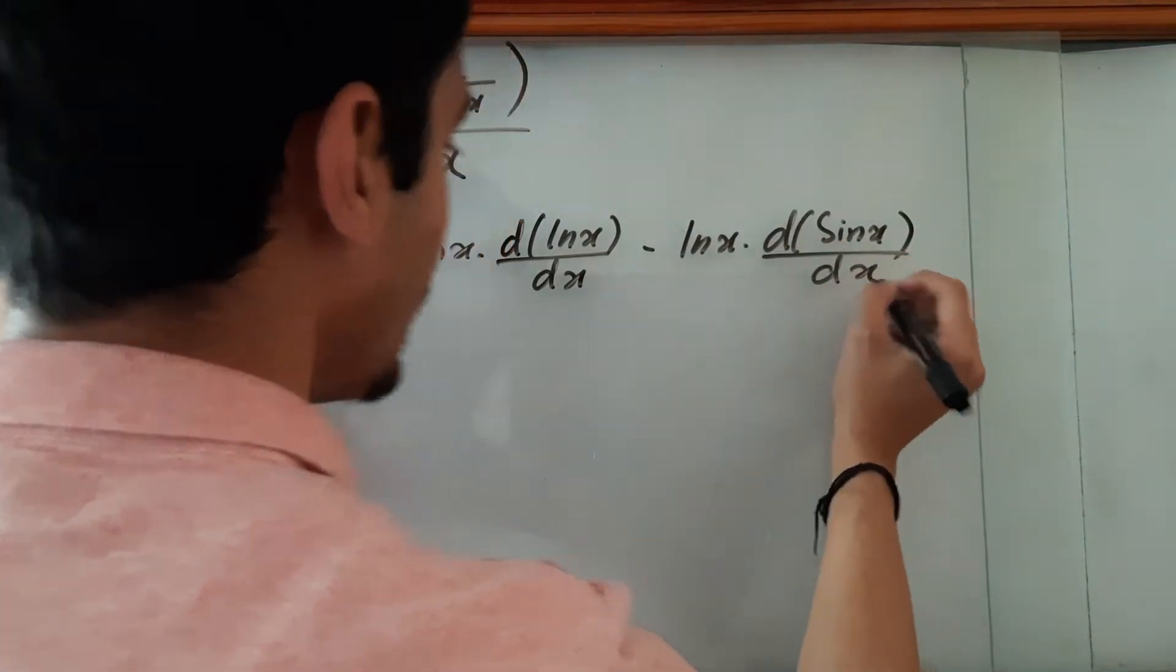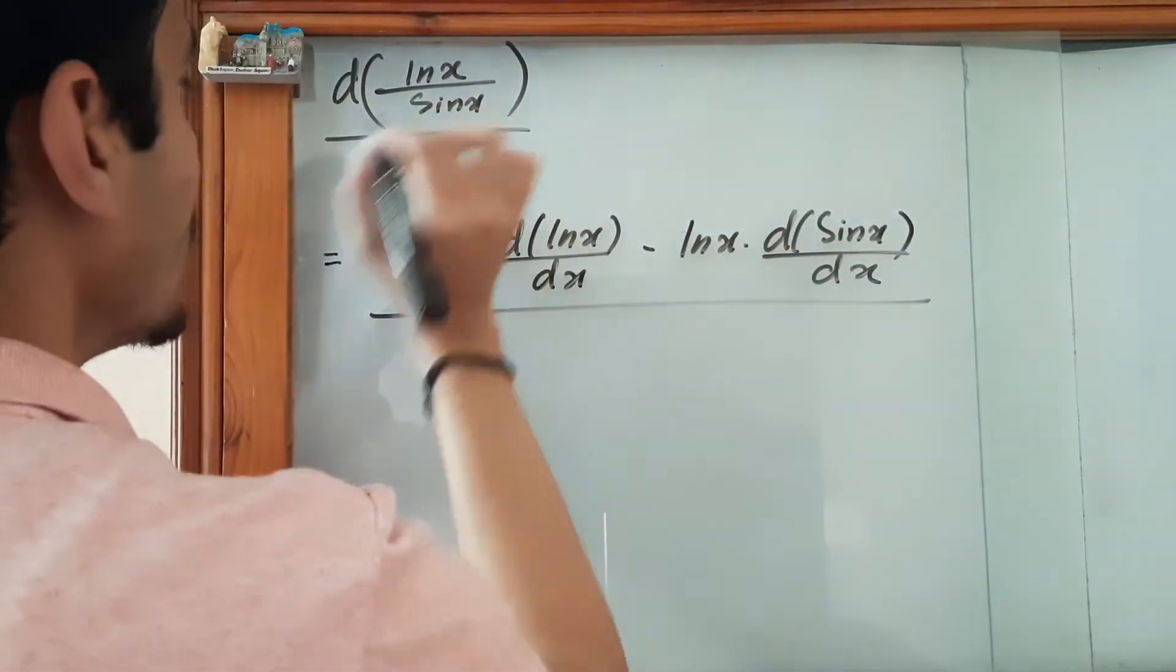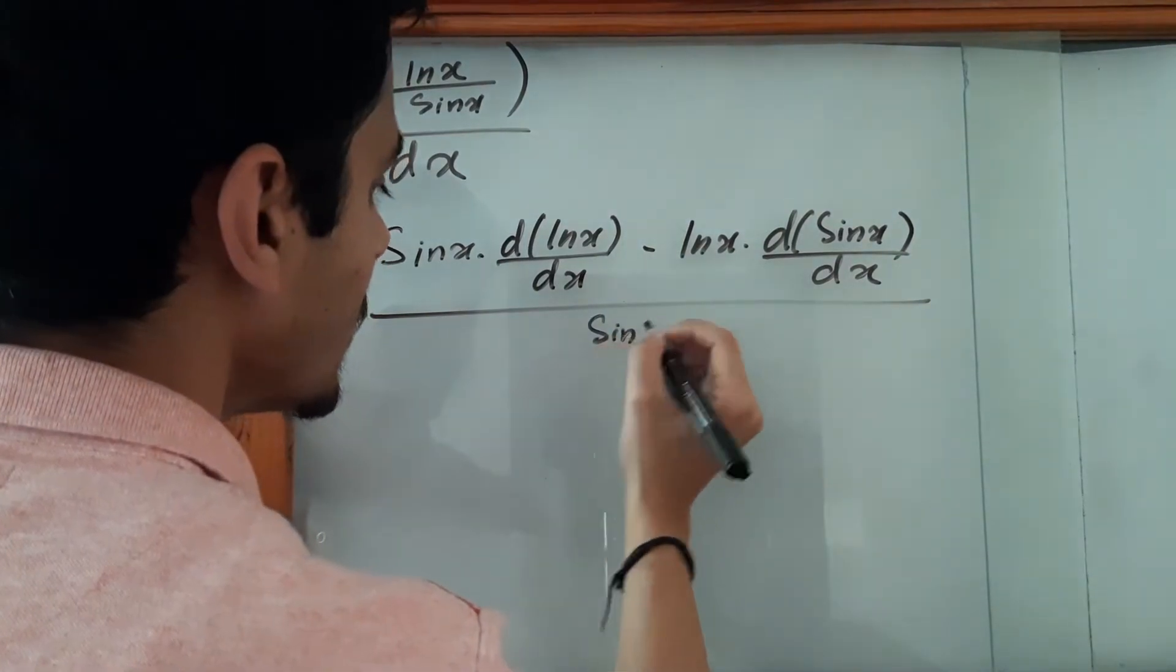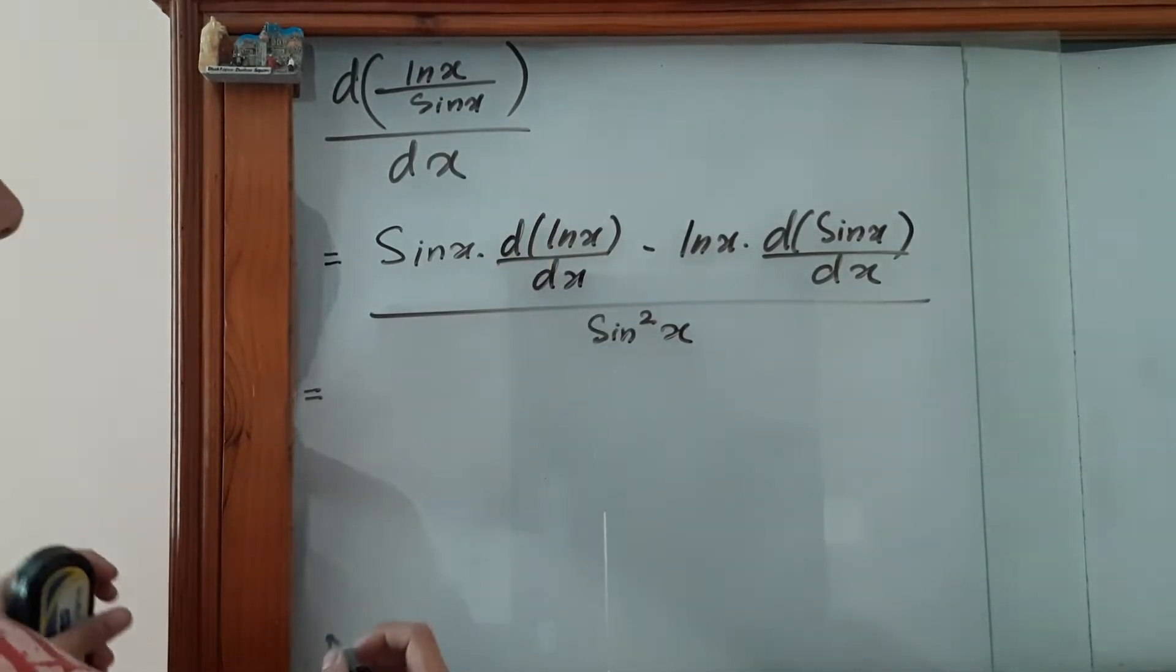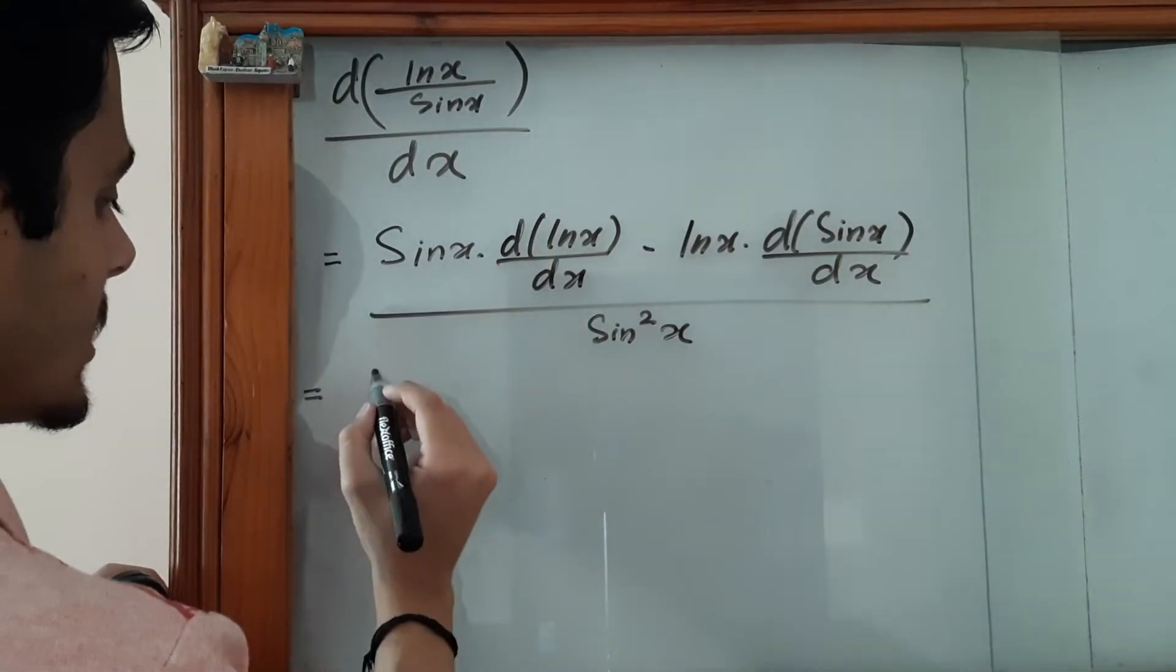That's what we are applying upon the denominator square. So it equals the derivative of ln(x) with respect to x, which is 1/x.